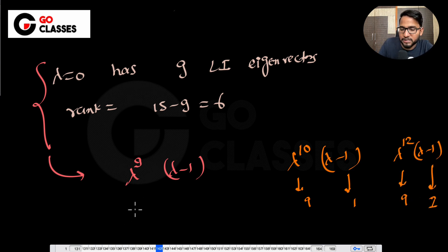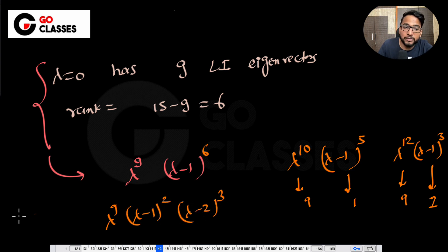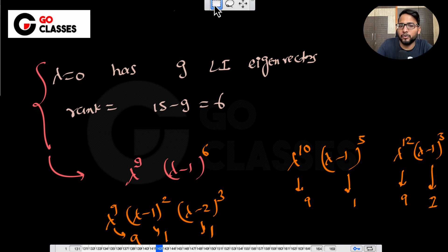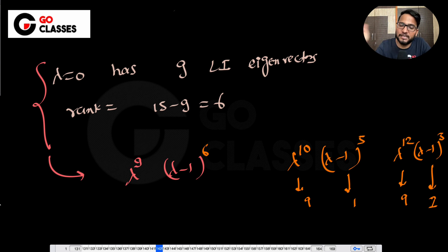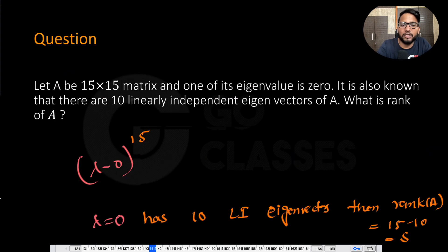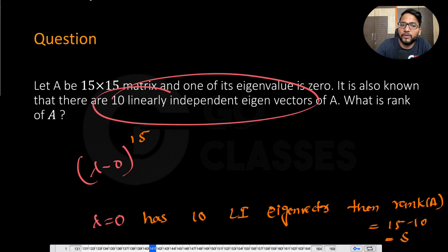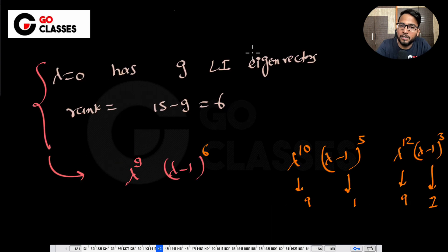The total power of the characteristic polynomial must be 15. Since we don't know how many of the 10 linearly independent eigenvectors correspond to λ = 0, we cannot determine the exact rank. The rank depends on that information, which has not been provided.